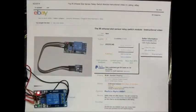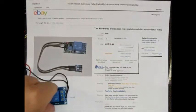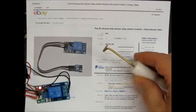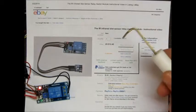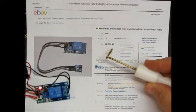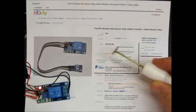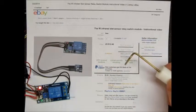Here is the other part that I bought off eBay. It's an infrared slot sensor relay switch module, and it was $16.25 with shipping and handling from Canada.